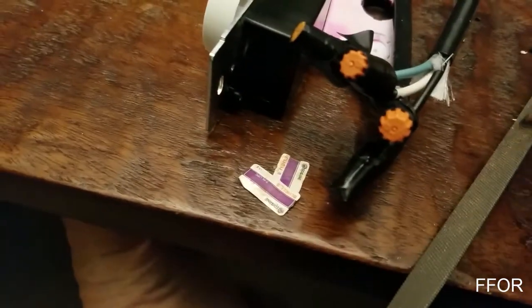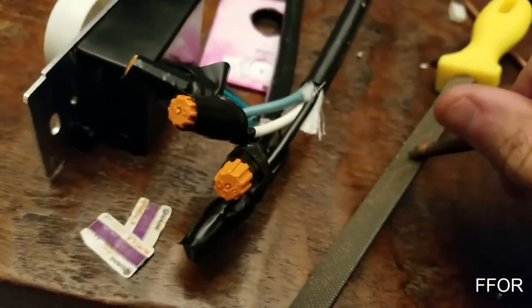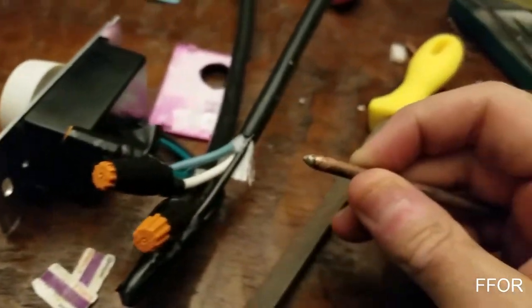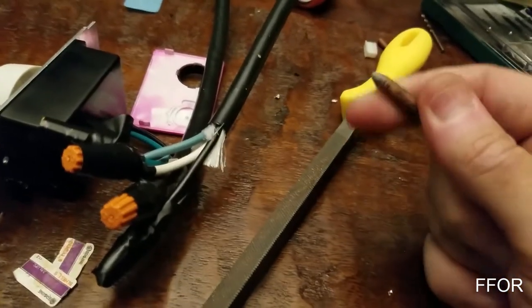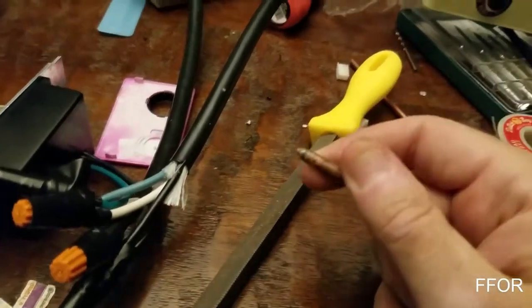You're going to cut off the tip, use the file, file it down. Just rub it across, file it down till you get a point, or you can get a flat spade, or basically whatever type of tip you want. You can hammer it down if you want and that works very well.